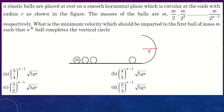This is the first question. N elastic balls are placed at rest on a smooth horizontal plane which is circular at the ends with radius r. The masses of the balls are given as m, m/2, m/2² and so on — so there are n balls whose masses form a geometric progression.